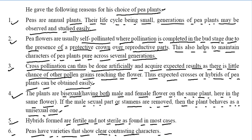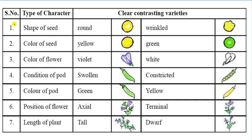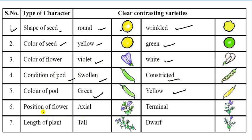Let us see the contrasting characters in the table. First is the shape of seeds — round shape versus wrinkled shape. Second is seed color — yellow versus green. Third is color of flowers — violet versus white. Fourth is condition of pods — swollen versus constricted. Fifth is color of pods — green versus yellow. Sixth is position of flowers — axial versus terminal. Seventh is length of plant — tall versus dwarf.